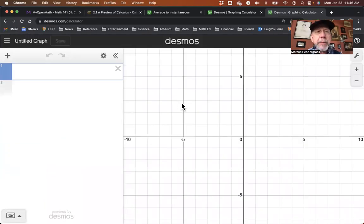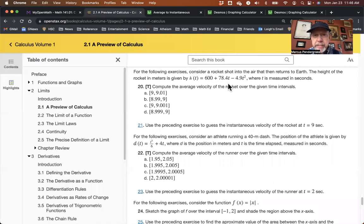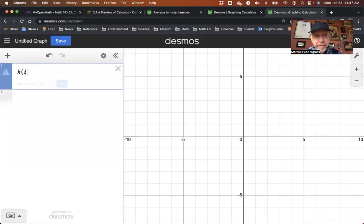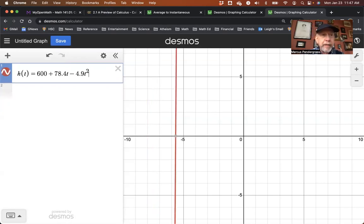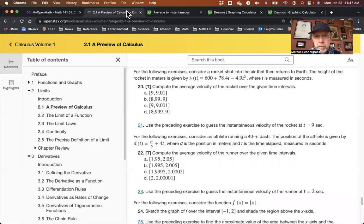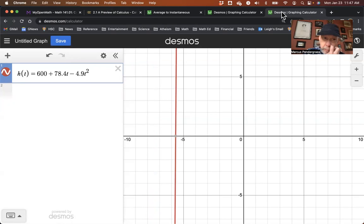And to compute these rates of change using Desmos, the first thing you want to do is just enter the function in. So let me remind myself of the function. It's h of t is 600 plus 78.4t minus 4.9t squared. Let's see if I can remember that, so just enter that. 600 plus 78.4t minus 4.9 times t squared. So it looks like I've got my function in there correctly.